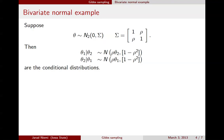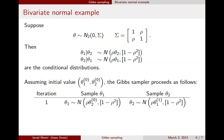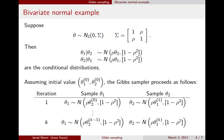The Gibbs sampler works by starting with an initial value. At the first iteration, we sample theta1 conditional on the current value for theta2. Then we turn around and sample theta2 from the full conditional distribution for theta2 given the value of theta1 we just drew. We repeat this procedure many times — generically at iteration k, we use the value for theta2 at k-1, and then we use the value for theta1 at k to draw theta2.